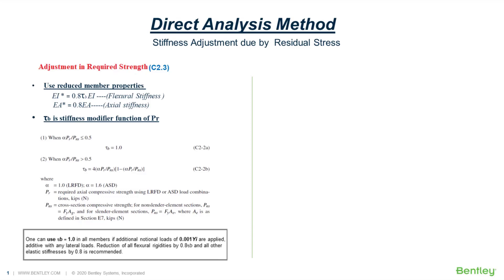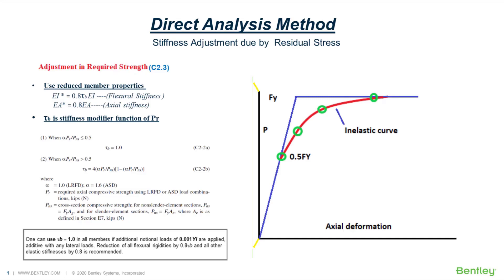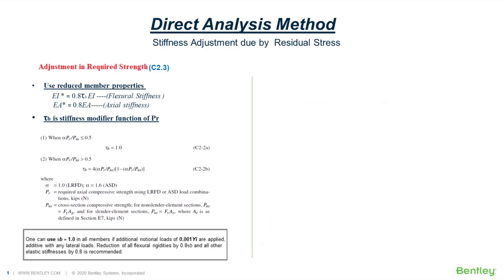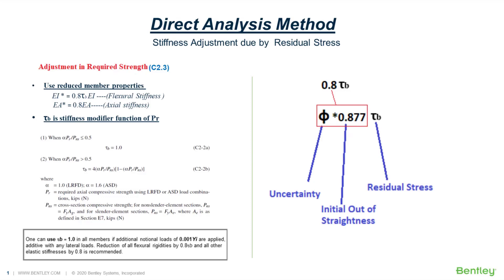We can correlate these factors with the same considerations in the column curve equation. For frames with slender members where the limit state is governed by elastic stability, the 0.8 factor on stiffness is roughly equivalent to the safety margin used in the column curve equation: 0.9 × 0.877 of the Euler crippling load, where 0.877 accounts for initial out-of-straightness and 0.9 is the uncertainty factor. This product is approximately 0.79 × PE, roughly equal to 0.8. For frames with intermediate or stocky columns, the 0.8 × tau_b factor reduces stiffness to account for inelastic softening prior to the member reaching its design strength. So the stiffness adjusted in direct analysis includes the uncertainty factor, initial member out-of-straightness, and stiffness reduction due to residual stress — the same as considered in determining member capacity.